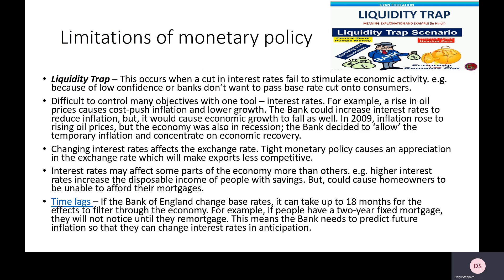Here are some of the limitations of monetary policy — reasons why it's not always going to lead to the outcome we want. We have something called a liquidity trap. When we lower interest rates, we're trying to stimulate more borrowing and spending to grow aggregate demand. But if banks lack confidence — they're worried about people not being able to repay loans, or about house prices falling and leaving banks exposed to lots of debt — then banks might not want to pass on those interest rate savings to consumers. So even though the base rate is lower, it doesn't mean banks want to take on that risk, and consumers still cannot access good borrowing.